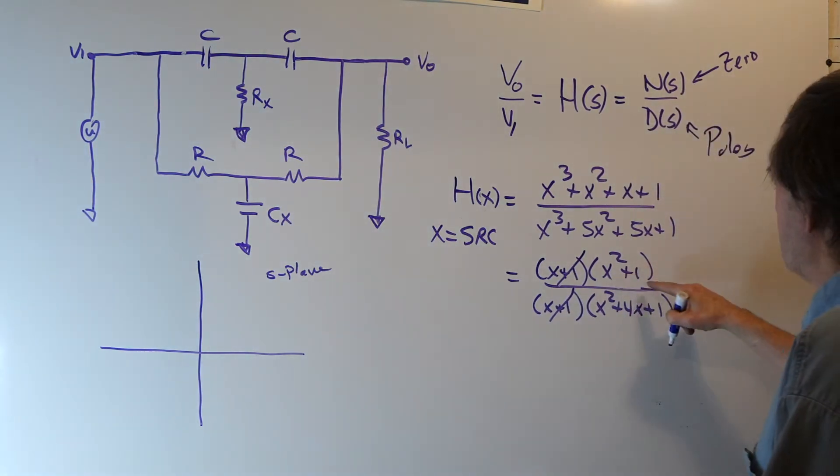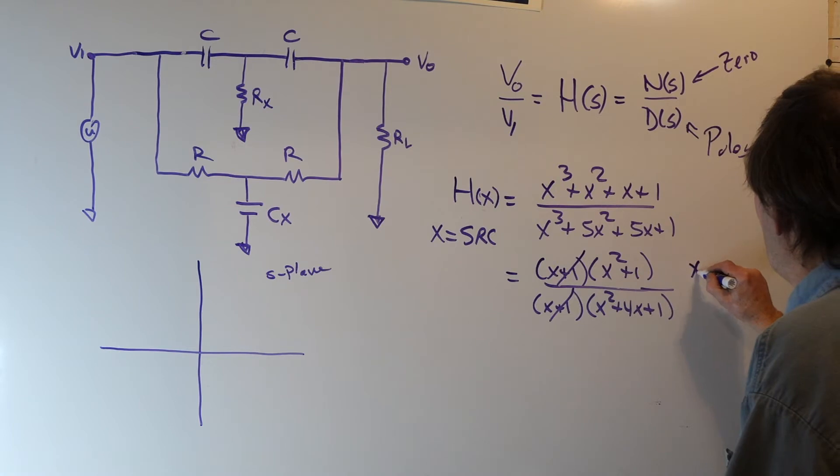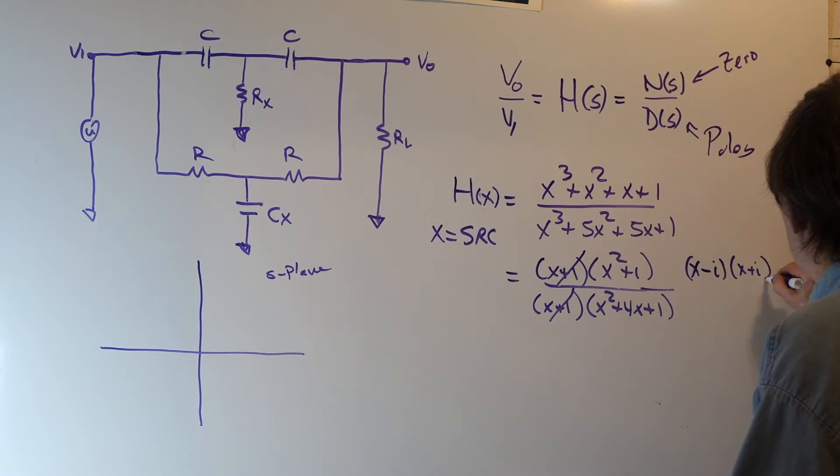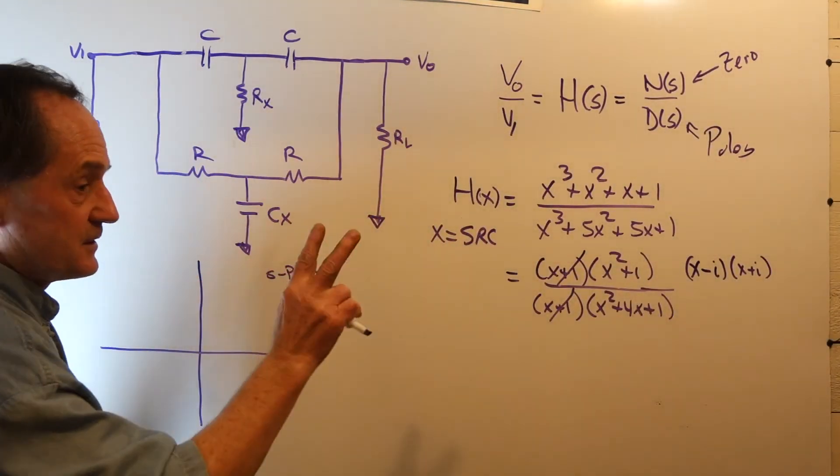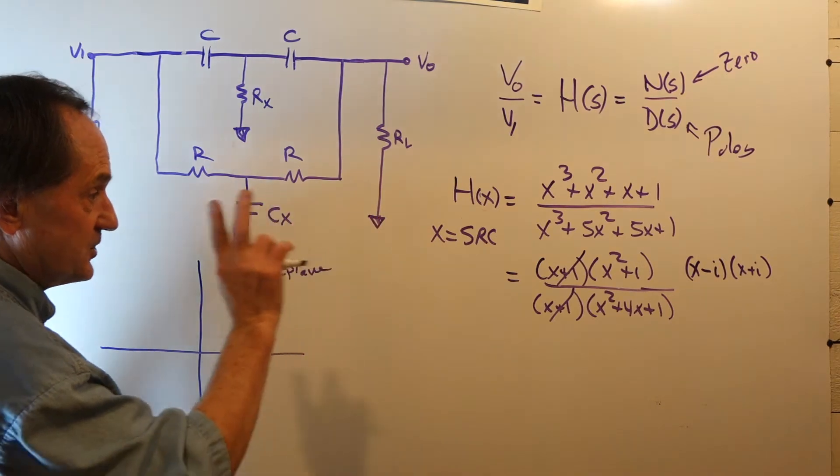This can be factored into X minus J and X plus J, which tells us we have two zeros on the J omega axis.